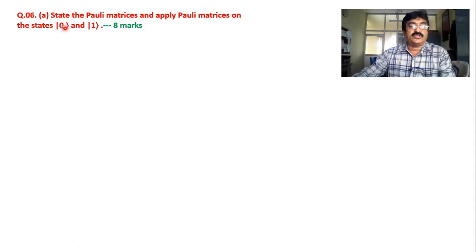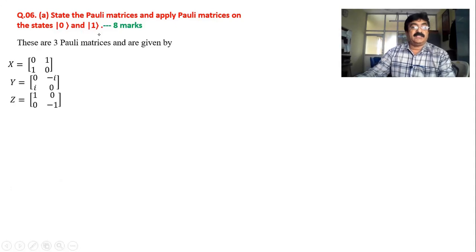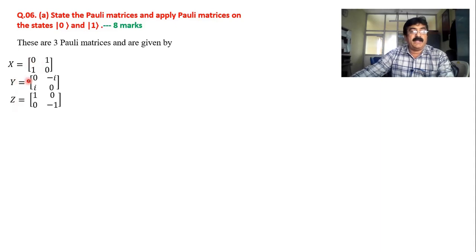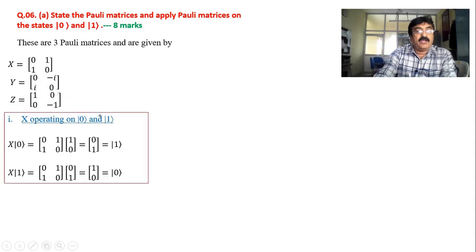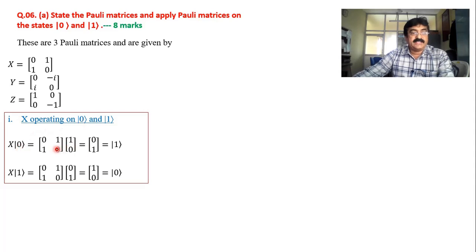Now the next question: state the Pauli matrices and apply each Pauli matrix on the zero state and one state. There are three Pauli matrices — X, Y, and Z. X is given by [0,1; 1,0], Y is given by [0, -i; i, 0], and Z is given by [1, 0; 0, -1].